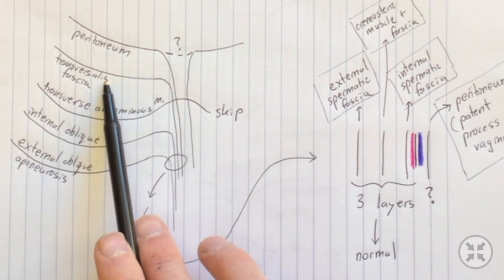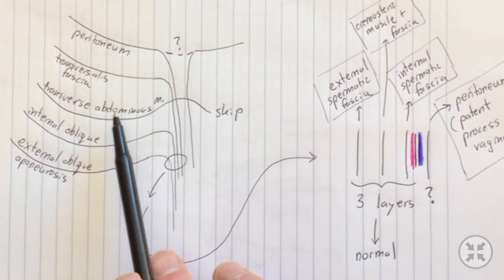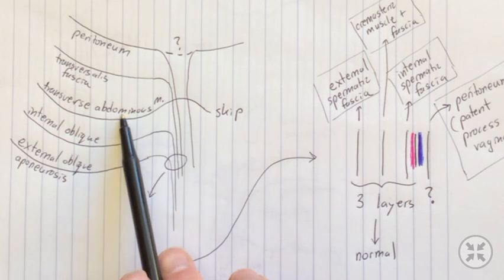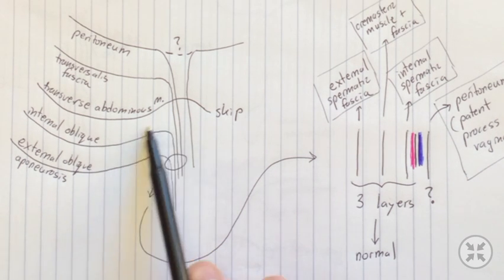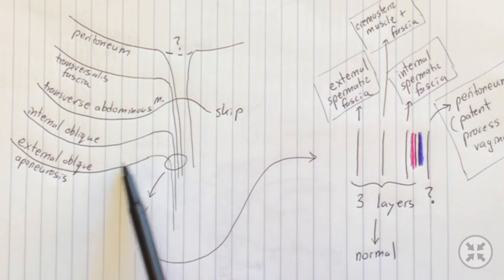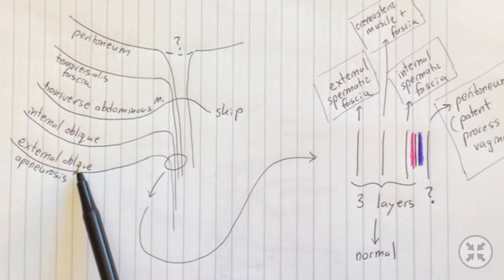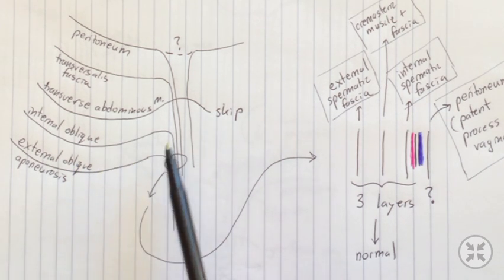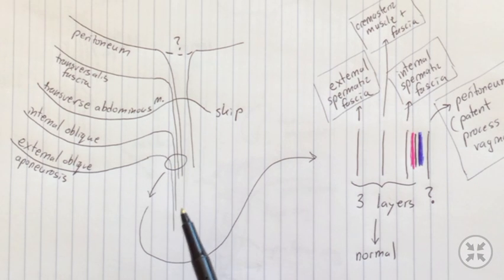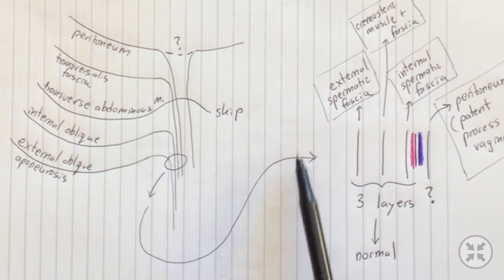You're going to get covered by your transversalis fascia. They're going to actually go through the transversus abdominis, which will skip over them and form the deep inguinal ring. They're going to get something through the internal oblique, and they're going to get something from the external oblique, which is now an aponeurosis at this point. To show you what all these three different things turn into at the level of the spermatic cord, let's move over here.